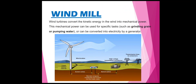Windmill: wind turbines convert kinetic energy into mechanical power. This mechanical power can be used for specific tasks such as grinding grain or pumping water, or can be converted into electricity by a generator.